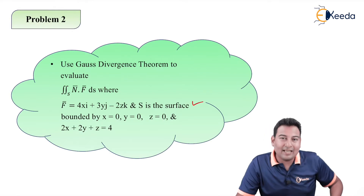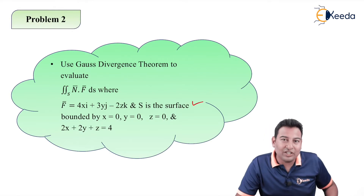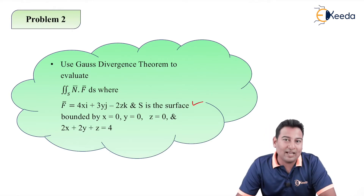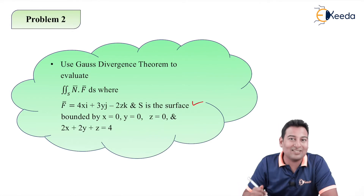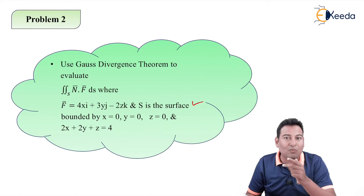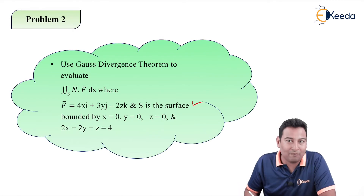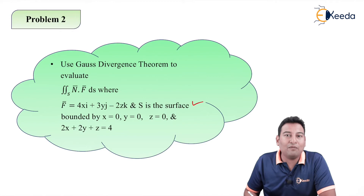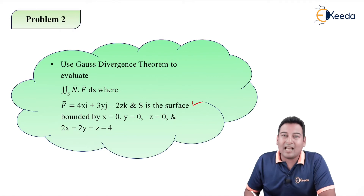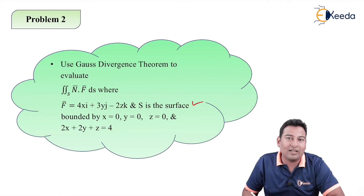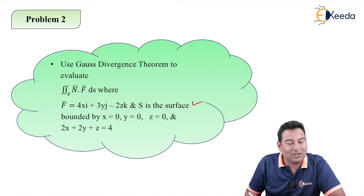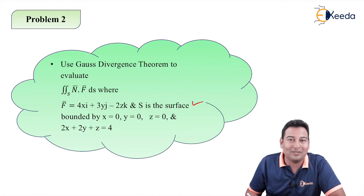In the case of GDT, you can internally divide problems into types. Problem 1 and Problem 2 are the first type where we have planes. In the last problem, all the limits were directly provided to us, but here the limits are not given to us — we need to find them.